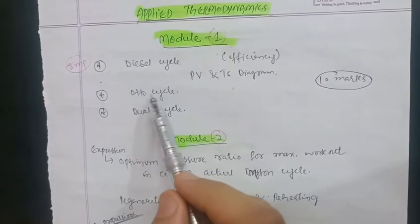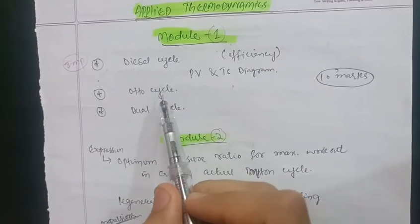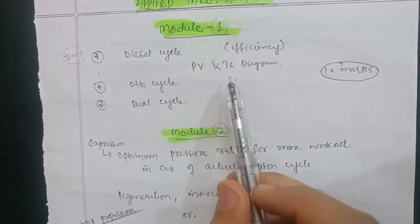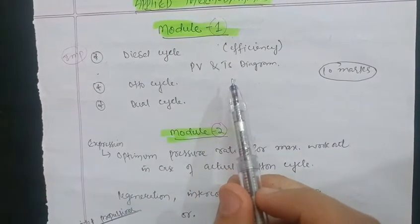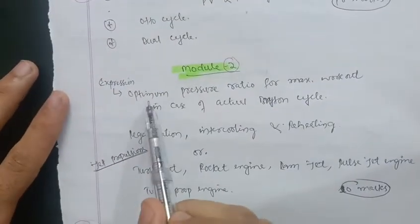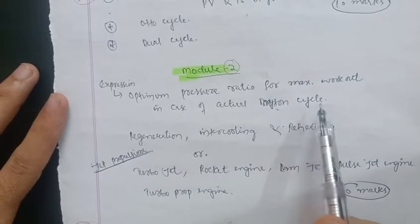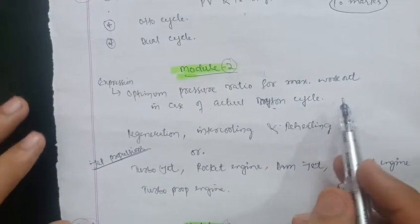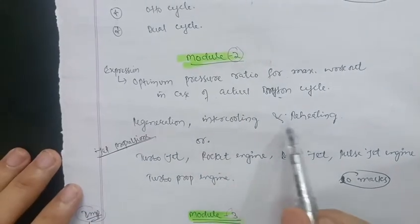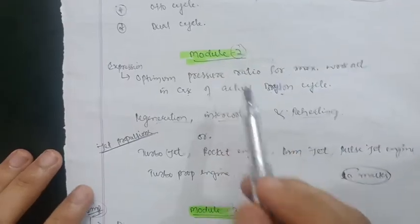That is all you need to cover in Module 1 for 10 marks. In Module 2, the expression for the optimum pressure ratio for maximum work output in case of the actual Brayton cycle is important — it also carries 10 marks.